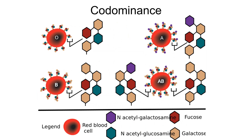Unlike incomplete dominance, in codominance the two traits are not simply blended together. Think back to the cow example — if we bred a white cow with a brown cow and got a light brown cow, that might be incomplete dominance. But in that photo we can make out separate patches of white and brown, which is codominance. We have two alleles where one is not dominant to the other and also the two don't simply blend.